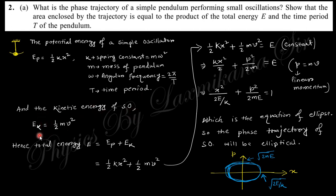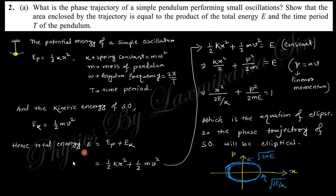The kinetic energy is E_k = (1/2)mv². Hence the total energy is E_k + E_p = (1/2)kx² + (1/2)mv². We convert velocity into momentum p = mv, since the phase trajectory is a graph between momentum and position (phase space). This gives an elliptical equation, so the phase trajectory is an ellipse.